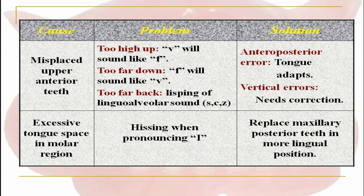Let's see a few problems caused by the dentist and the solutions. First is incorrect placement of upper anterior teeth. If the upper anterior teeth are placed too high up, the 'v' will sound like 'f', and if placed too far down, 'f' will sound like 'v'. If placed more palatally, there will be lisping of linguoalveolar sounds like 's', 'c', and 'z'. Usually for anterior-posterior errors the tongue gets adapted, whereas for vertical errors correction is necessary.